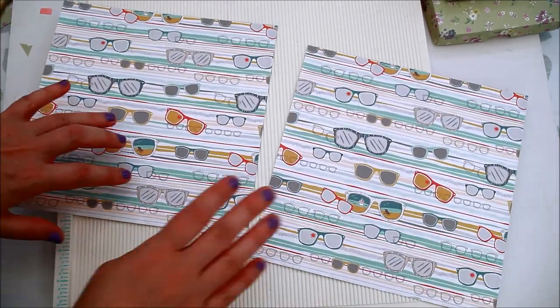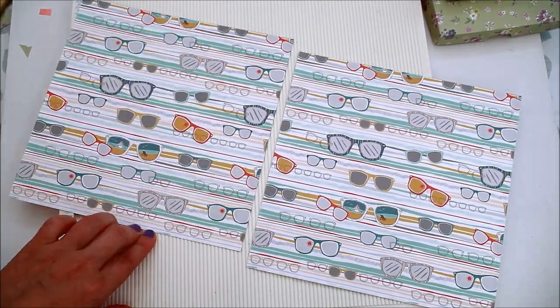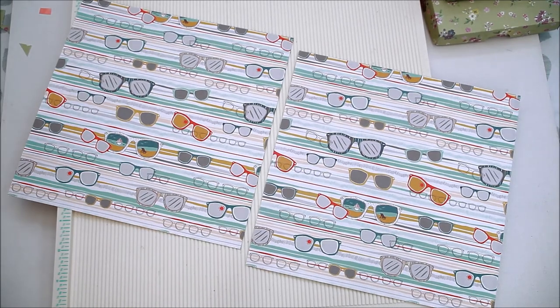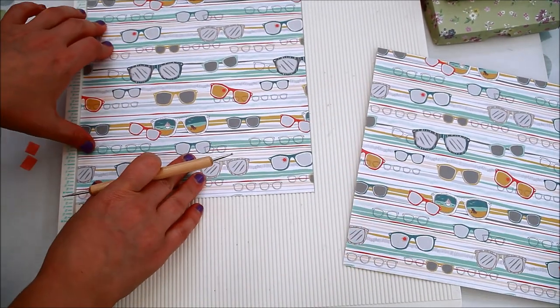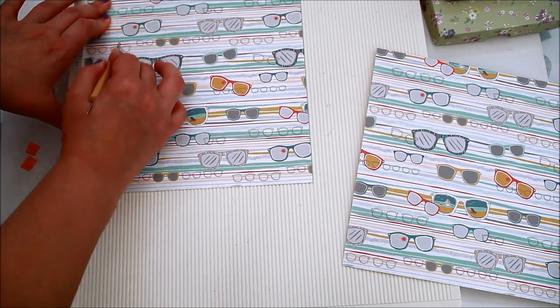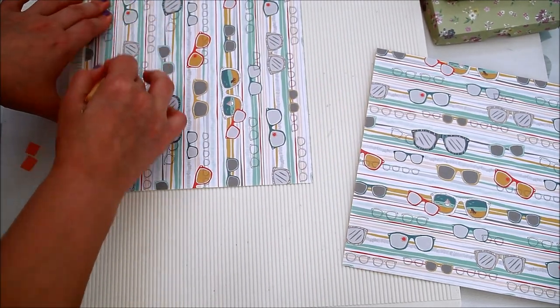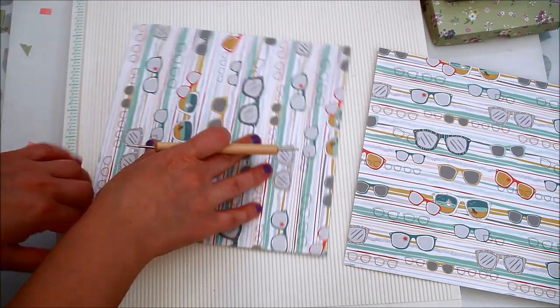For this box, you will need two 8 by 8 inches sheet of paper. And you need to score it at one and a quarter inch on all the four sides.